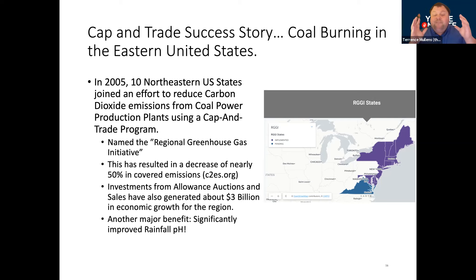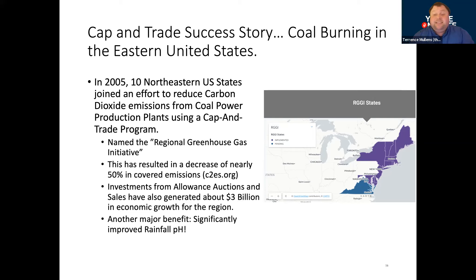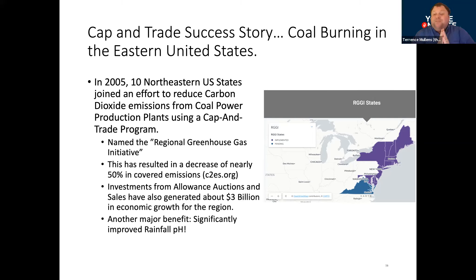And that's essentially what's happened in the Northeast of the United States — a major decrease of covered emissions of nearly 50%, so almost half, has occurred because of this. This has also generated over $3 billion in economic growth for the region. So it's actually been good for the economy and good for the environment. The other big benefit is that it has significantly improved the pH of rainfall in that area.